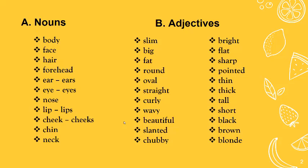Artinya: slim — ramping. Big — besar. Fat — gemuk. Round — bulat atau bundar. Oval — lonjong. Straight — lurus. Curly — keriting. Wavy — berombak. Slanted — sipit. Chubby — tembem. Bright — cerah atau terang. Flat — untuk hidung berarti pesek. Sharp dan pointed — mancung. Thin — tipis atau kurus. Thick — tebal. Tall — tinggi. Short — pendek. Black — hitam. Brown — coklat. Blown (blonde) — pirang untuk rambut.